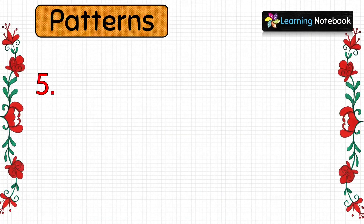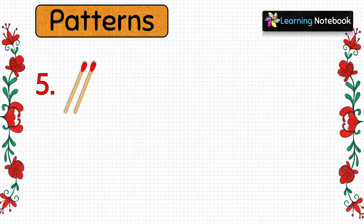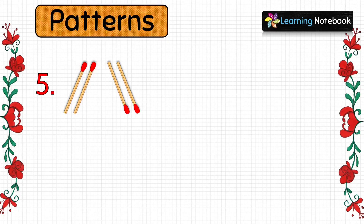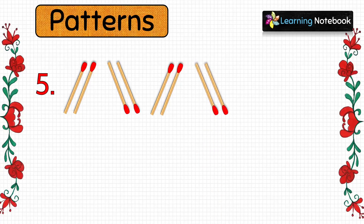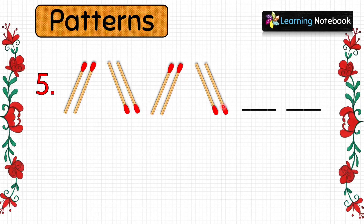Now let's see our fifth pattern. First paste two matchsticks in a slanting upward position, then paste two matchsticks in a slanting downward position, then again two matchsticks in a slanting upward position. So here we can identify the pattern as: two upward slanting matchsticks, then two downward slanting matchsticks, then again two upward slanting matchsticks.